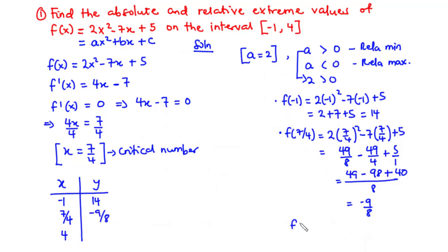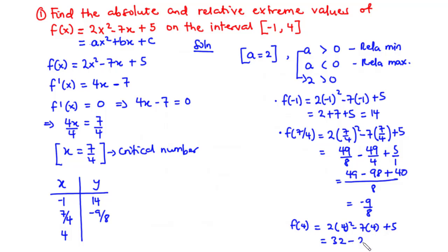For f(4): 2 times 4² minus 7 times 4 plus 5. So 4² is 16, 2 times 16 is 32. Minus 7 times 4 is 28, and then plus 5. 32 plus 5 is 37, minus 28 is 9. So f(4) = 9.